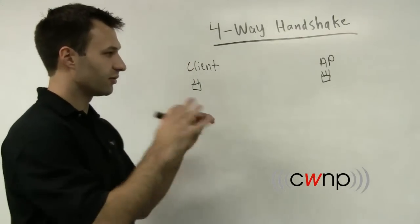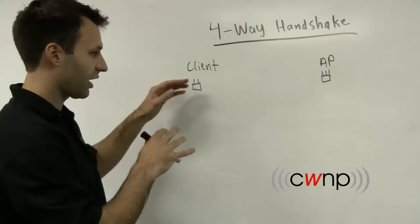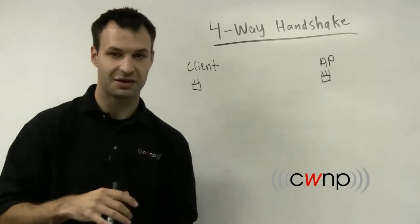So I've drawn here just the quick framework, that is the client with just two antennas there and the access point with three antennas.